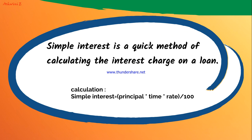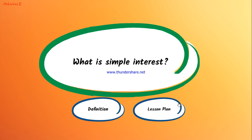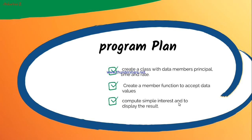The formula does not change: simple interest is equal to principal amount into time into rate, divided by hundred. Remember, you are going to give braces here. This is the calculation part.